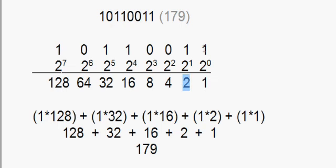And it's always one times 128, one times 32, one times 16, one times 2, and one times 1. Or 128 plus 32 plus 16 plus 2 plus 1 equals 179.